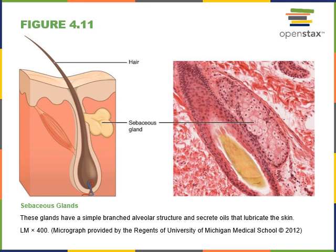Here we see an illustration and a light micrograph of a sebaceous gland attached to a hair follicle. Sebaceous glands have a stratified cuboidal epithelium and the structure of a simple branched alveolar multicellular exocrine gland. The product secreted by the sebaceous gland is an oil known as sebum. Sebum helps lubricate and condition the hair and skin to keep it from becoming brittle and dried out, and also has antibacterial properties to help prevent infection.